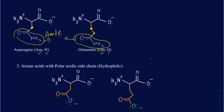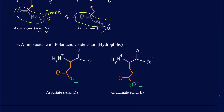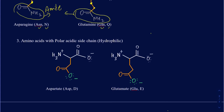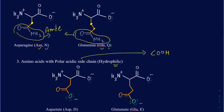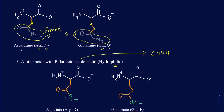Let's talk about some amino acids that have polar acidic sidechains. Another way of saying this is their sidechain is going to have an acid group, which is COOH, and they're still going to be hydrophilic and able to make hydrogen bonds. One of them is called aspartate and the other is glutamate. These names sound similar to asparagine and glutamine — aspartate comes from asparagine: once you hydrolyze asparagine, you get aspartate; and once you hydrolyze glutamine, you get glutamate.